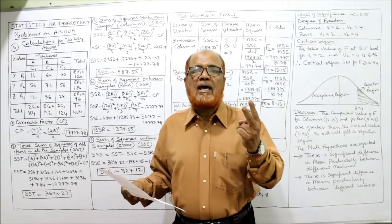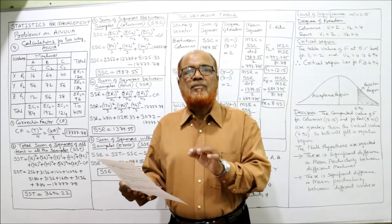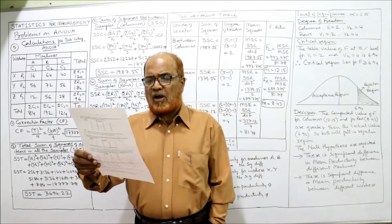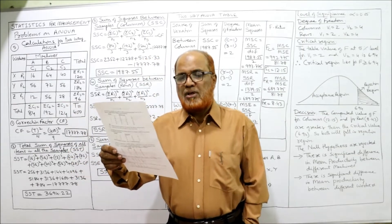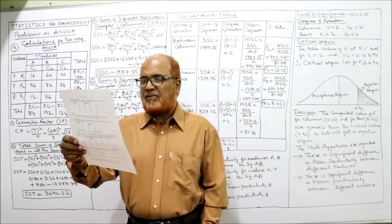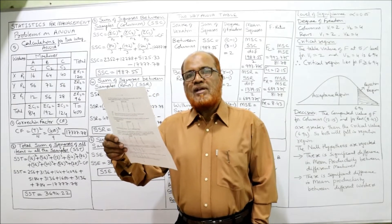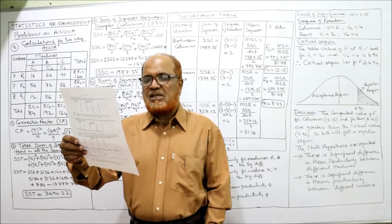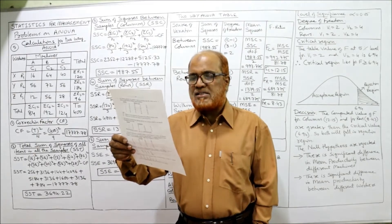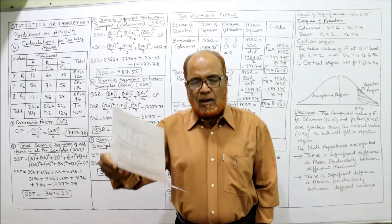The productivity data: worker X produced 16, 64, 40; worker Y produced 56, 72, 56; worker Z produced 12, 56, 28. Machine A produced 16, 56, 12; machine B produced 64, 72, 56; machine C produced 40, 56, 28.